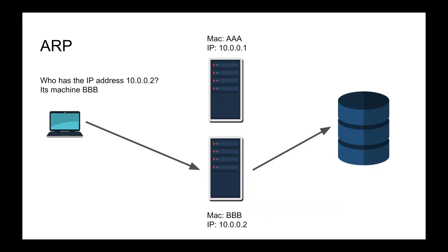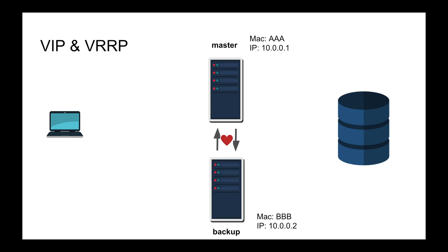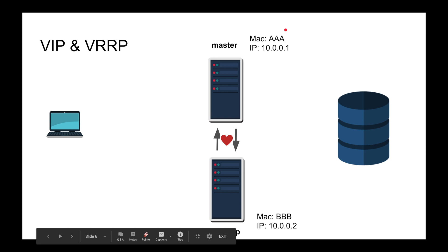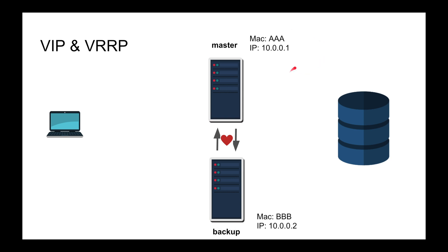It's very critical that you understand this for the next point: the virtual IP address. Let's assume this scenario. I have two machines here, each with their own physical IP address — 10.0.0.1 and 10.0.0.2 — with MAC addresses AA and BB respectively. These machines have special software that allows them to communicate with each other, and this is called a heartbeat — they just continuously talk to each other.